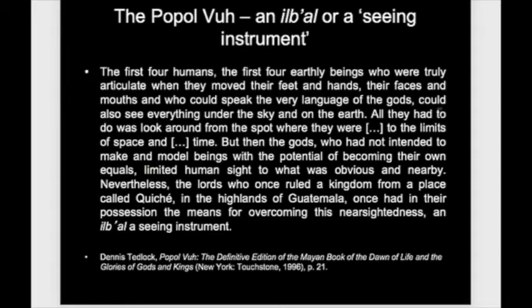He explains the rationale of the book in this introduction. He says, he quotes: The first four humans, the first four earthly beings who were truly articulate when they moved their feet and hands, their faces and mouths, and who could speak the very language of the gods, could also see everything under the sky and on the earth. All they had to do was look around from the spot where they were, to the limits of space and time. But then the gods, who had not intended to make and model beings with the potential of becoming their own equals, limited human sight to what was obvious and nearby. Nevertheless, the lords who once ruled a kingdom from a place called Quiché, in the highlands of Guatemala, once had in their possession the means for overcoming this nearsightedness, an ilbal, a seeing instrument.